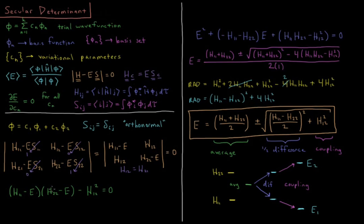I'll turn this around into a quadratic polynomial in terms of e. When I FOIL this out and factor terms, I get e squared plus minus h11 minus h22 times e plus h11 h22 minus h12 squared equals 0. Now I'm going to use the quadratic formula on this. a equals 1, b equals this, c equals this.